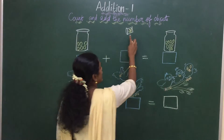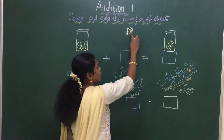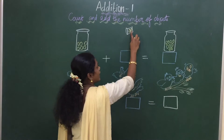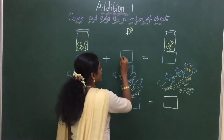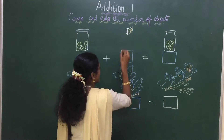Now you can see in the glass. Let us count: 1, 2, 3. How many marbles are there? 3. So right here, 3.